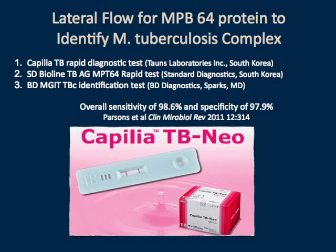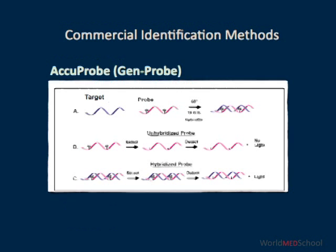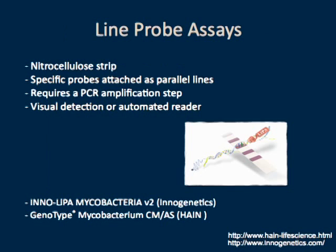Other phenotypic methods include high-performance liquid chromatography, and more recently, MALDI-TOF — matrix-assisted laser desorption ionization time-of-flight mass spectrometry — has become available for identification of mycobacterial cultures. Genotypic methods include probes, PCR, and sequencing. Probes are most commonly used. Gen-Probe is one of the earlier assays that became available for identification of Mycobacterium tuberculosis culture — a probe, when bound to its target, leads to light production and confirms the presence of Mycobacterium tuberculosis. Another probe commonly used is the line probe assay, made by two different manufacturers. The first step involves amplifying a target, then the amplicons are hybridized with a probe on a nitrocellulose paper, and formation of a band indicates a positive reaction corresponding to a particular mycobacterial species.